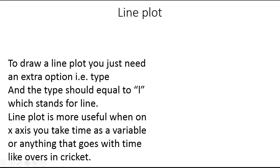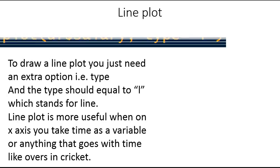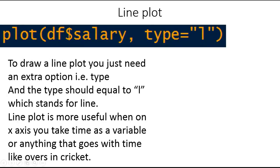A line plot is more useful when on the x-axis you are going to take time as a variable, or anything that goes with time like overs in cricket, like a time series plot. We extracted salary from the data frame with the dollar sign, and in between every additional argument in the function you must type a comma. So comma, then type equal to L means line plot.